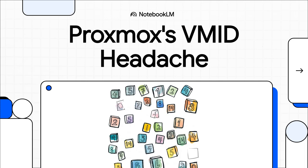If you're a Proxmox user, you know what I'm talking about. We've got this amazing platform — it's powerful, it's lean, it's packed with features — but there's this one tiny little thing, this number, that causes a frankly ridiculous amount of stress. Today we're going to talk about the VMID and why it's such a massive headache for so many of us.